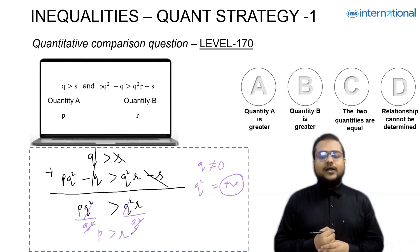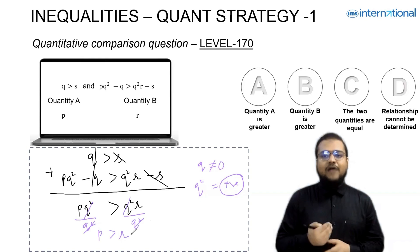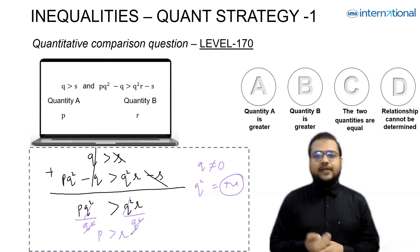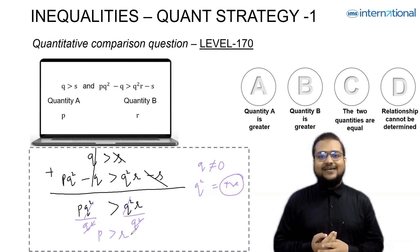Now in quantity A, you have P. In quantity B, you have R, and you have deduced that P is greater than R. Now tell me which answer choice you want to pick. Absolutely, it is answer choice A.